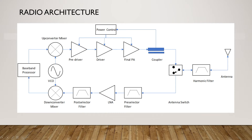The figure here shows the basic RF radio system, which contains a baseband processor, up-conversion mixer, down-conversion mixer, voltage-controlled oscillator, local oscillator, frequency generating unit, pre-driver, driver, final PA, coupler, power controller, antenna switch, harmonic filter, antenna, pre-selector filter, low noise amplifier, and post-selector filter. Each radio component plays a unique and significant part in achieving the end goal of receiving and transmitting information wirelessly over a long distance.